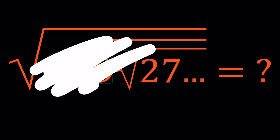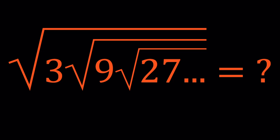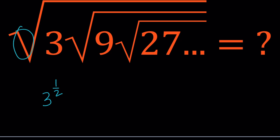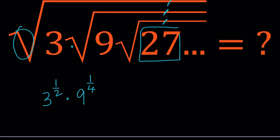Instead, we're going to look at each number separately — think independently. Isolate the 3: it's under 1 radical, so we write it as 3 to the power 1/2. The square root of 9 is also square-rooted by the outer radical, making it the fourth root: 9 to the power 1/4. The 27 is under 3 radicals, so it's the eighth root of 3 to the third, which is 3 to the power 3/8. Since these terms are multiplied, we multiply them.